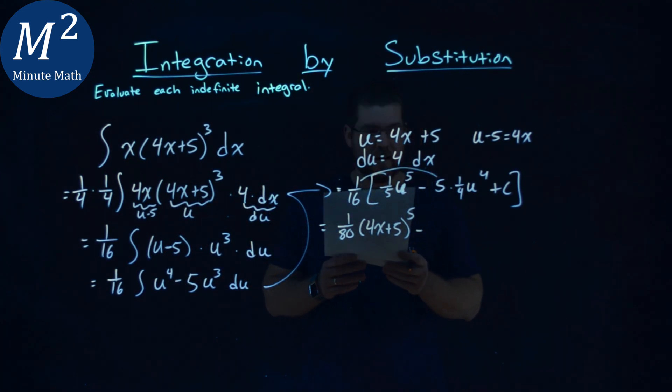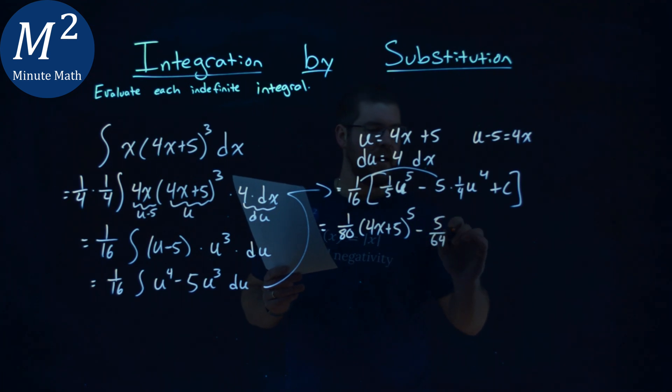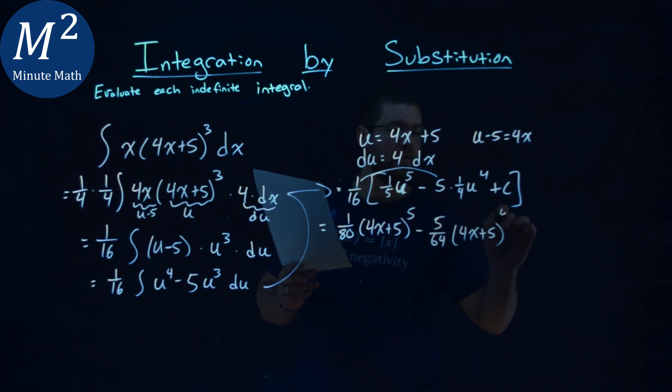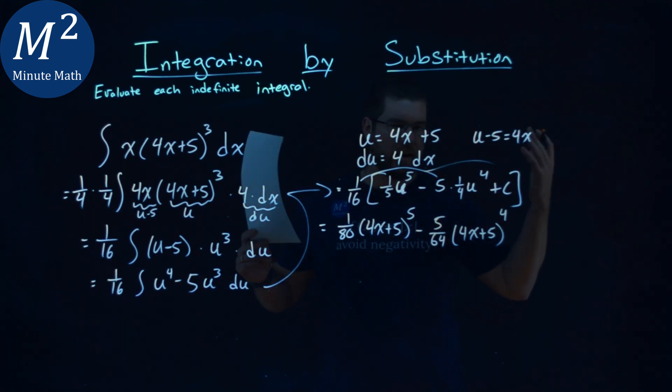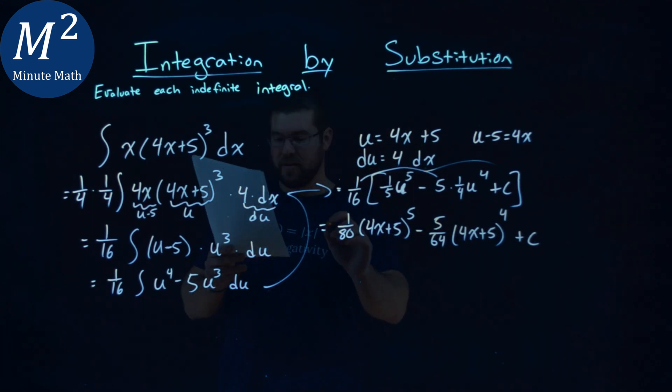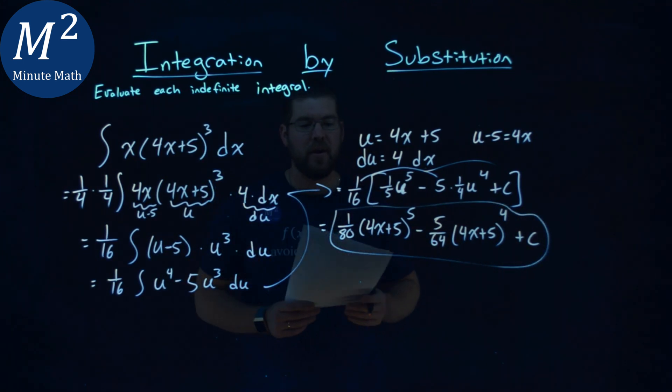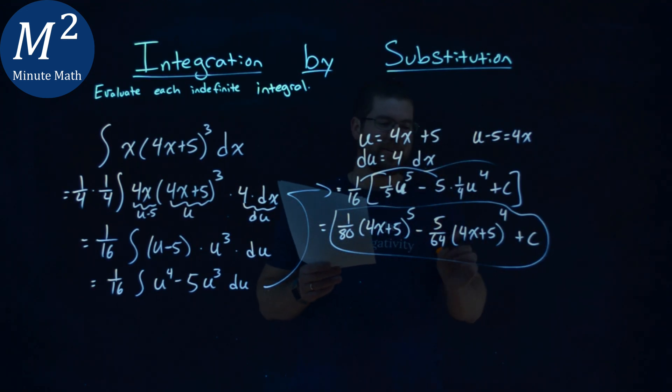Minus. So we have 5 and over 1 16th times 1 fourth is a 64. And so 5 over 64 is right here. And then, instead of a u, we have a 4x, again, plus 5 directly in to the fourth power. And granted, we can multiply this 1 16th times my plus c, but it's just another constant. So let's leave it as plus c right there. And that is it. My final answer here is double checking. Got it all right. We're good. My final answer is a 1 over 80 times 4x plus 5 to the fifth power minus a 5 over 64, 4x plus 5 to the fourth power plus c.